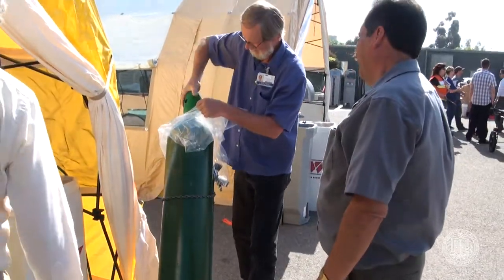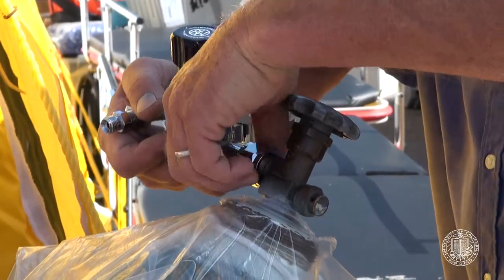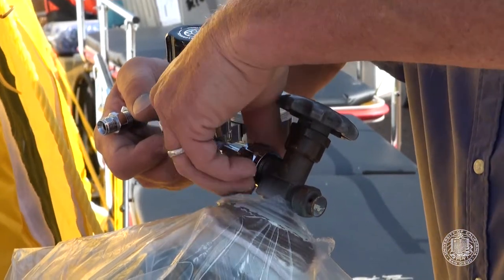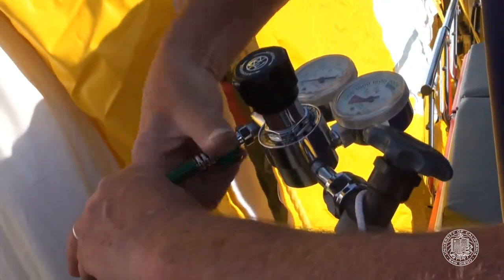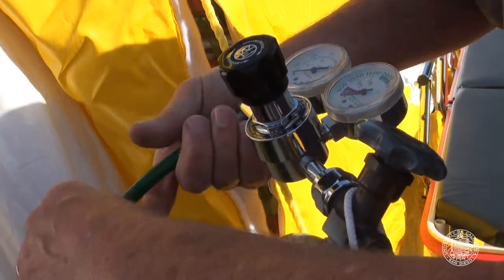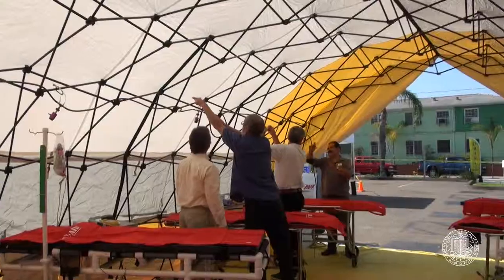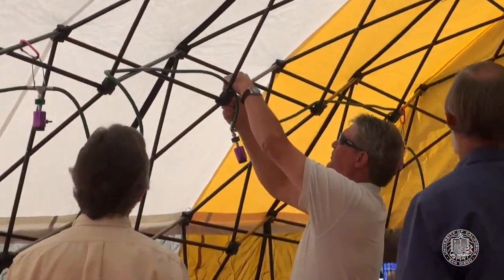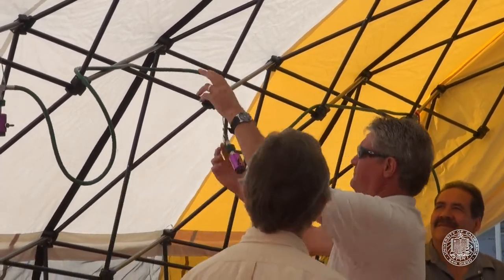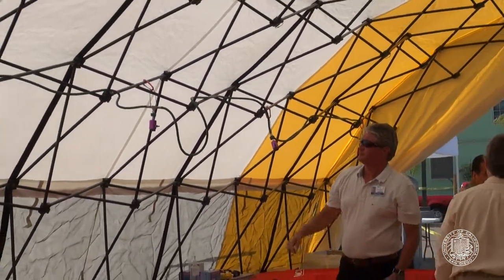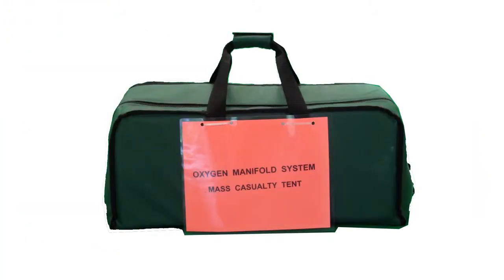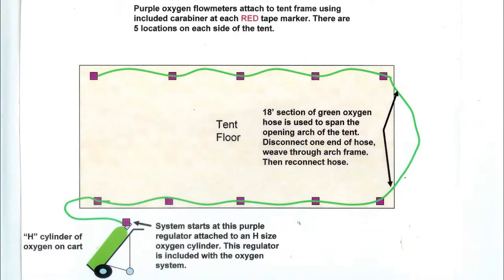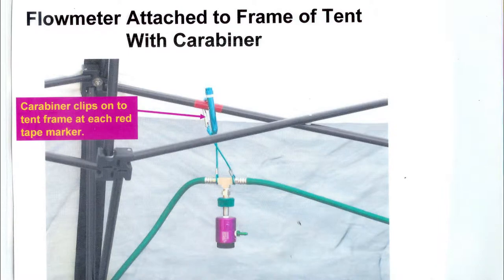The tank has 2,000 pounds of pressure — it's a standard H-cylinder of oxygen. The regulator, either a chrome one or a purple one (both come in the bag), is assembled, the hose is connected, and the system is plumbed to run around the tent. The entire gas system — all flow meters and the regulator — is preassembled and kept in a green duffel bag labeled as such. It contains an instruction sheet with a simple drawing showing how the system is laid out in the tent.